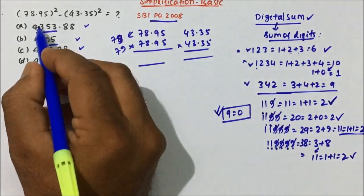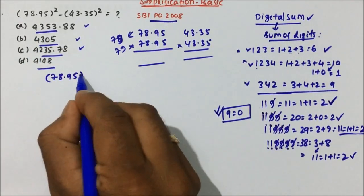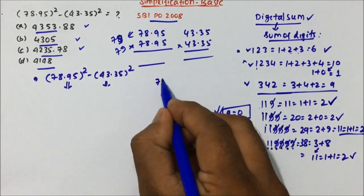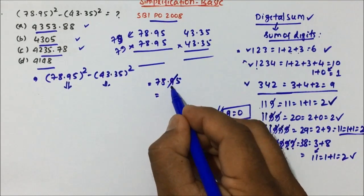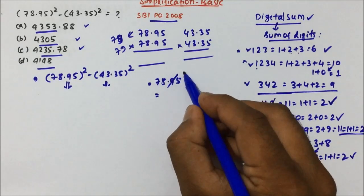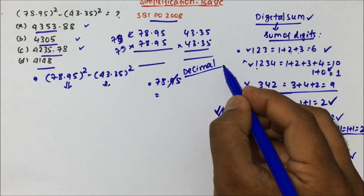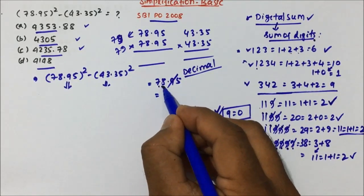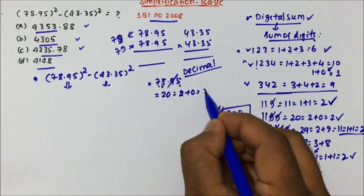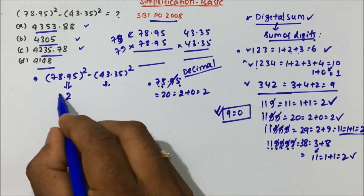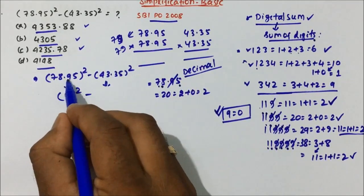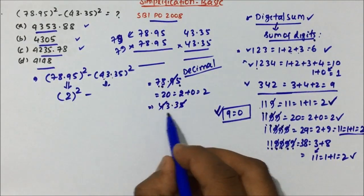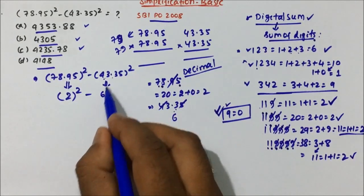Now let's see how we solve 78.95 squared minus 43.35 squared. We calculate the digital sum for both numbers. For 7895 — ignore the decimal — 9 is equal to 0, so ignore it. 7 plus 8 is 15, and 15 plus 5 is 20, and 2 plus 0 is 2. So digital sum of 78.95 is 2, and 2 squared is 4. For 43.35: 3 plus 3 is 6, and 9 is ignored. So digital sum is 6, and 6 squared is 36, whose digital sum is 3 plus 6 equals 9 equals 0.